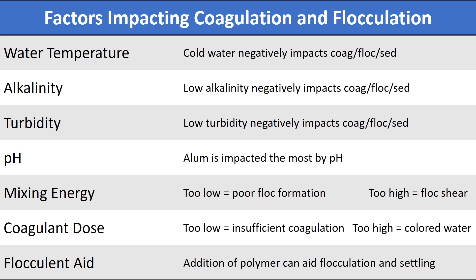An operator must control the mixing energy in each flocculation chamber to get good floc formation without tearing the floc apart. Dose is also important — insufficient coagulant leads to insufficient coagulation, while too high a dose can cause colored water. For example, too much alum will cause bluish or milky colored water in the distribution system, whereas too much ferric or iron-based coagulant can cause yellow water delivered to customers. The addition of polyelectrolytes or polymers — flocculant aid — will improve the coagulation and flocculation process.